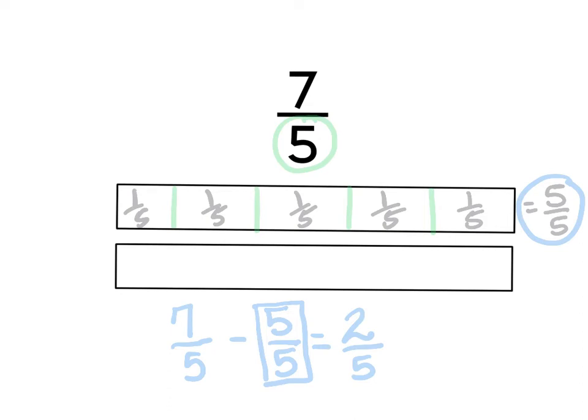So I need 2 more fifths to get 7 fifths. So I'm going to partition my second tape diagram and label each section of fifths.